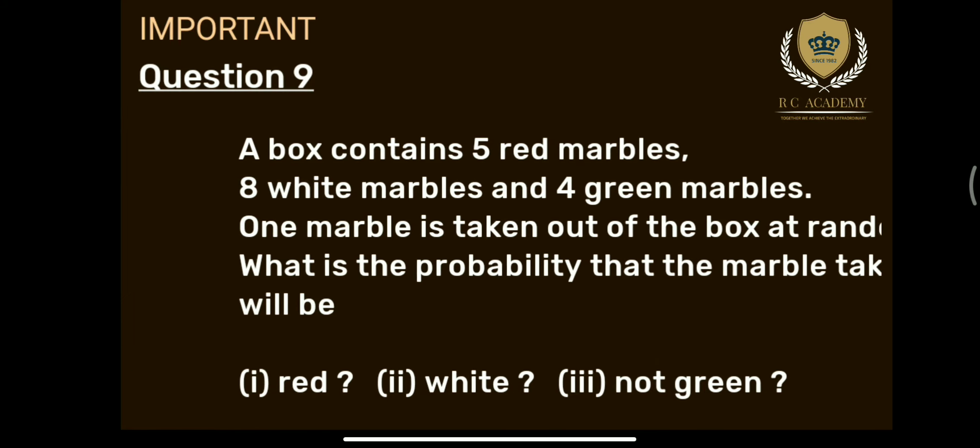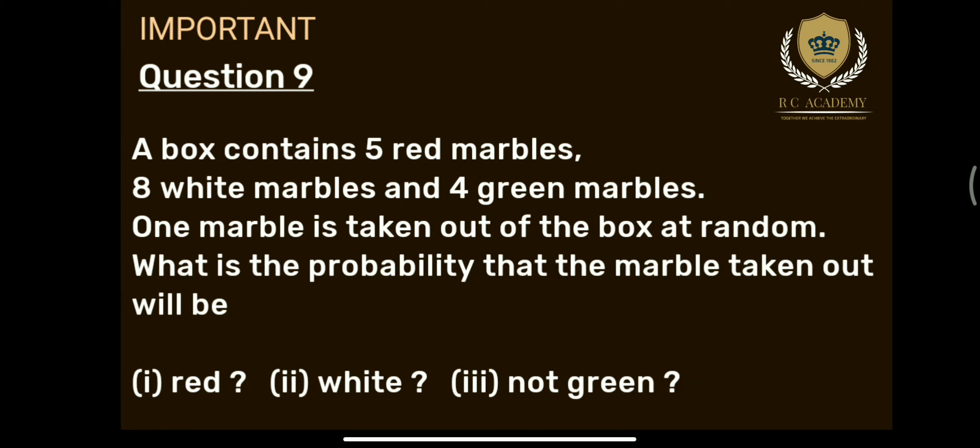Next question — Question number 9: Five red marbles, eight white marbles, and four green marbles. One marble is taken out of the box at random. What is the probability that the marble taken out will be: first, red; second, white; third, not green? क्या रहा है question के अंदर — एक box के अंदर तीन color के marbles हैं: red, white और green। Randomly एक marble निकाला तो उसकी probability निकालनी है कि वो red है, white है या not green है।